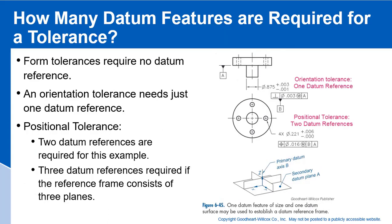How many datum features are required for a tolerance? Form tolerances require no datum references — form tolerances don't have any datum references. An orientation tolerance needs just one datum reference; for example, a perpendicularity tolerance back to datum A only requires one datum reference. But for the position of holes around a center plug, we have two datum references required — one for the plane of datum A and the other for the feature of size, datum B.